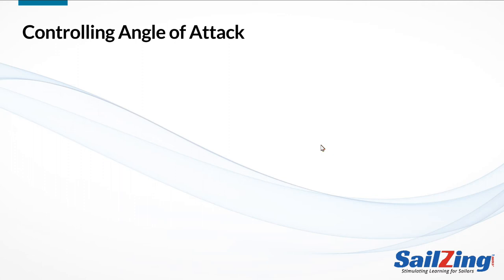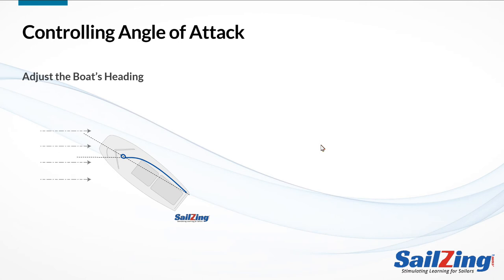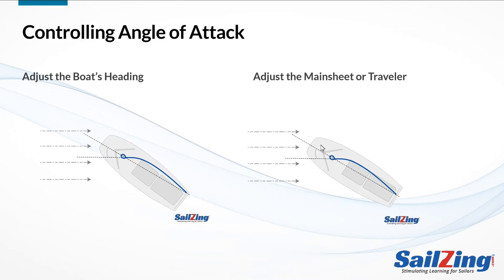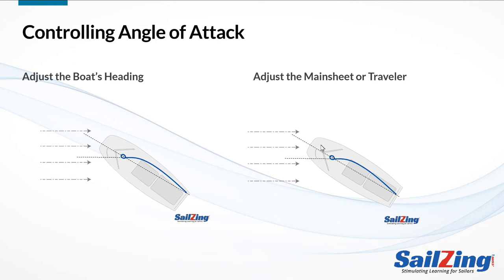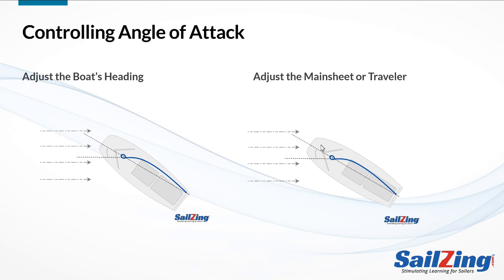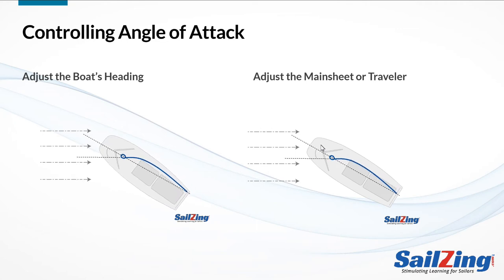Controlling the angle of attack is very simple, so we're covering it here for completeness. You either adjust the boat's heading or adjust the angle of the boom to the wind. To increase your angle of attack by steering, you simply bear off away from the wind. To increase it using the boom, you either pull in the mainsheet or pull the traveler to windward. Note that pulling in the mainsheet affects other aspects of sail shape, such as fullness and twist. If you want to adjust the angle of attack without affecting sail shape, you have to use the traveler.